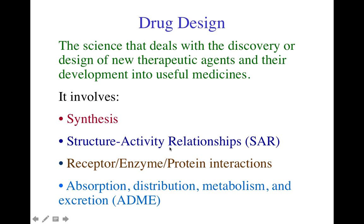Drug design also deals with receptor, enzyme, and protein interactions — collectively known as pharmacodynamics. This is basically the way the molecule will interact with your receptor, enzyme, and proteins in the body. Drug design also deals with pharmacokinetics, which includes how the drug gets absorbed, distributed, metabolized, and excreted from the body.